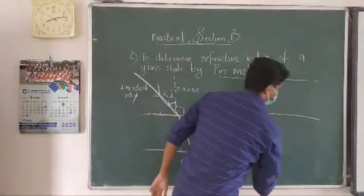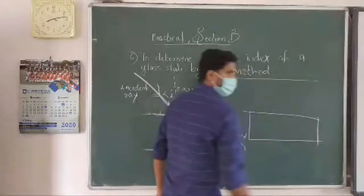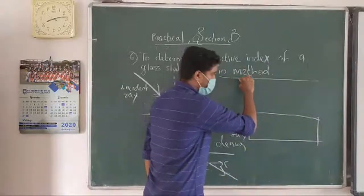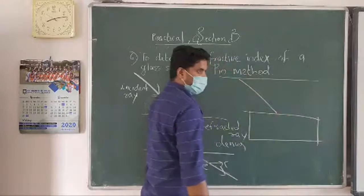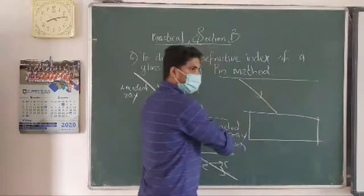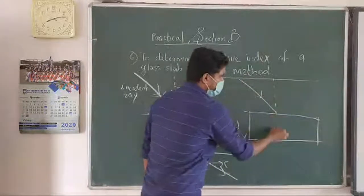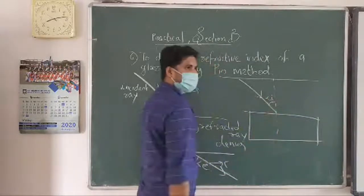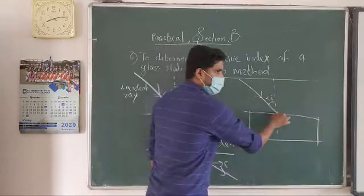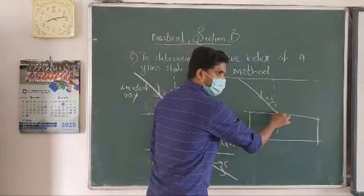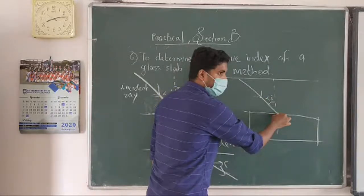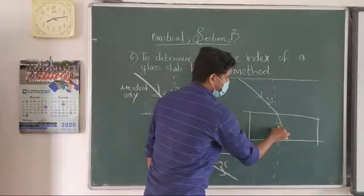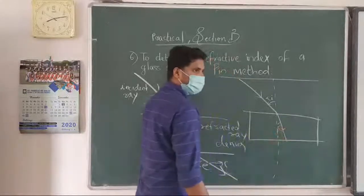So this is our glass slab. We are allowing light to fall on this glass slab. This is called the incident ray. This is the normal. This is the angle of incidence. After refraction, the ray will bend towards the normal. This is the angle of refraction.